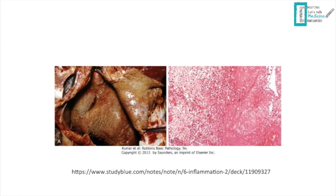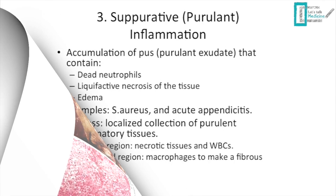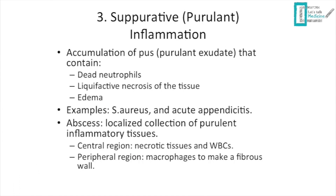The third morphological pattern is suppurative (purulent) inflammation, which contains pus. Pus consists of dead neutrophils, liquefactive necrosis, and edema. Examples that cause suppurative inflammation include Staphylococcus aureus and acute appendicitis.